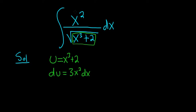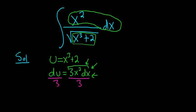Now in the integrand, we have x²dx. But here we have 3x²dx. The goal is to make what's here look like what's in the integrand. We can do that by dividing both sides by 3.